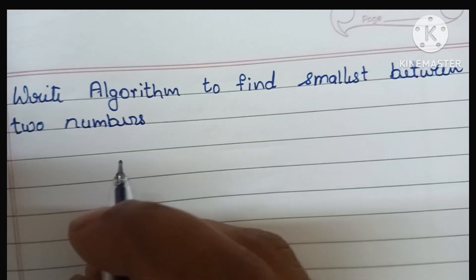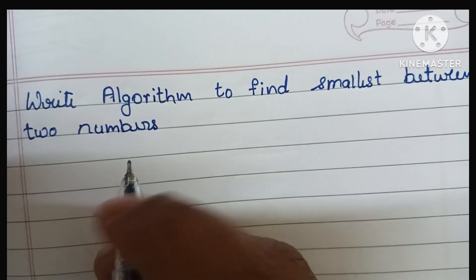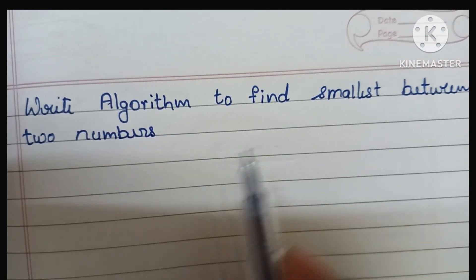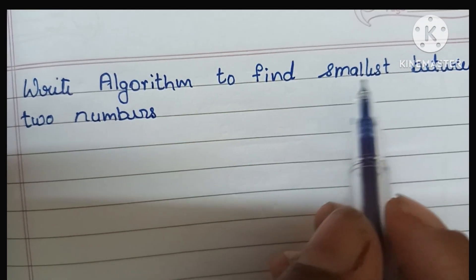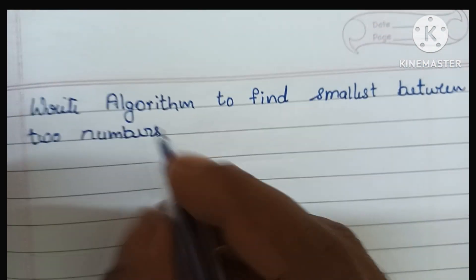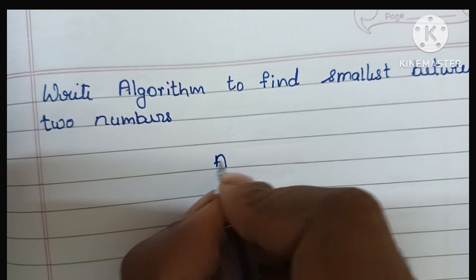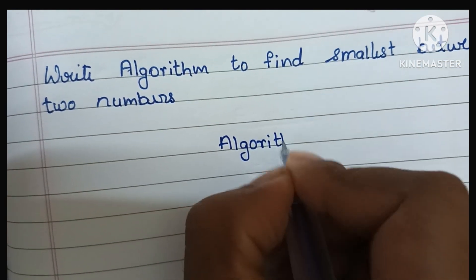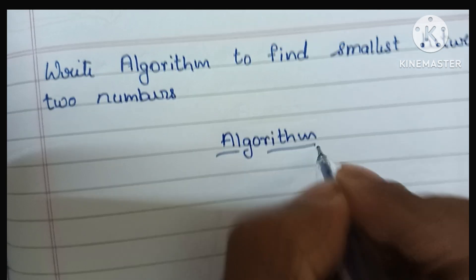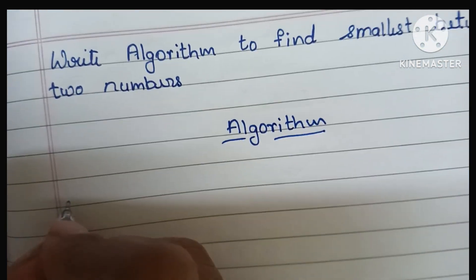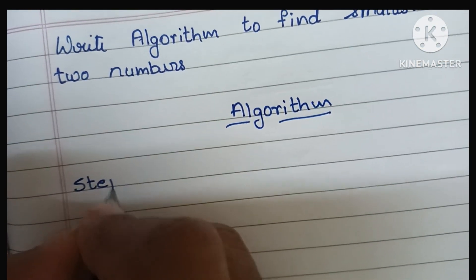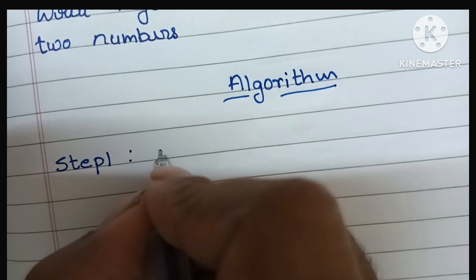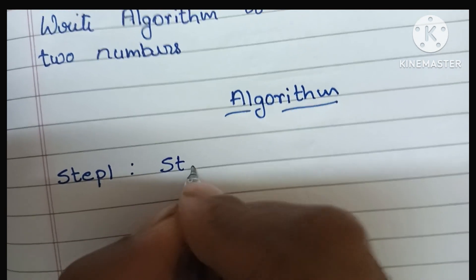Hi guys, in this video we are going to learn how to write an algorithm to find the smallest between two numbers. An algorithm is a step-by-step process to solve a problem. Step 1: an algorithm always starts with a start statement, so first we have to write the start statement.